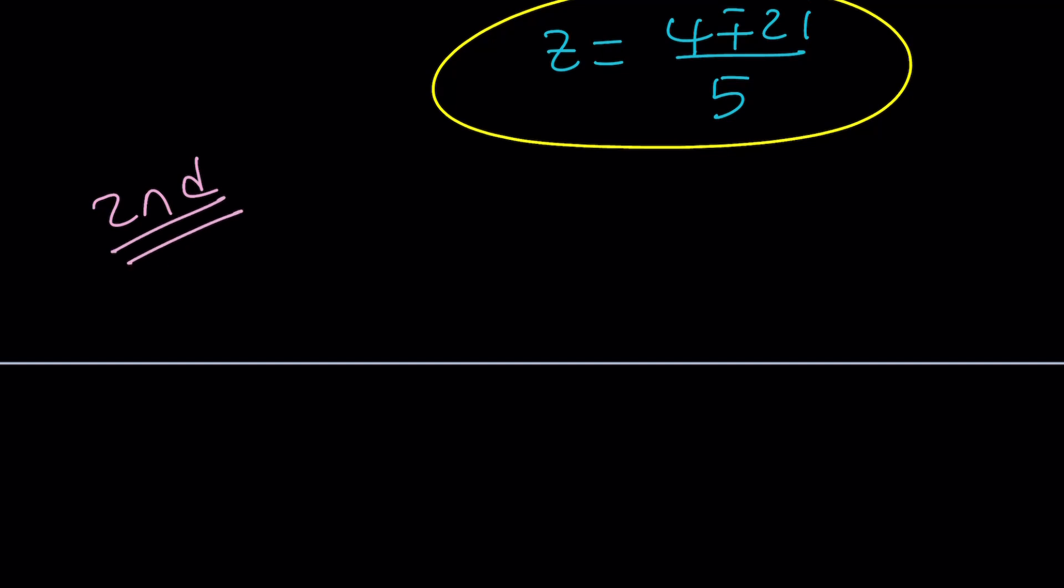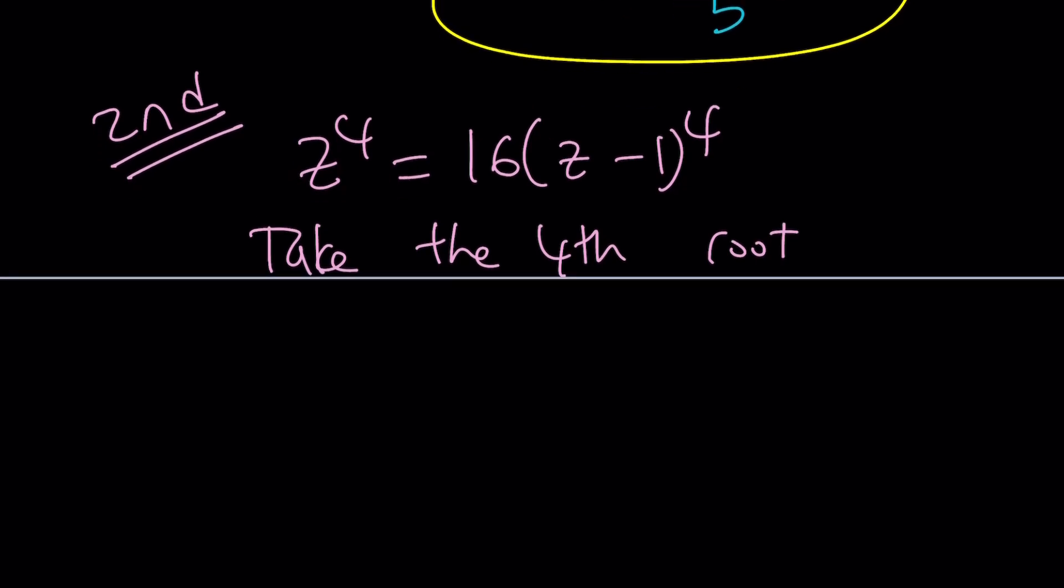For the second method, I'm going to go ahead and take the fourth root. Obviously we can do that because both sides are perfect fourth roots. So when you take the fourth root, you're going to get two results. Actually you should get more than that, but let's just say we get two.